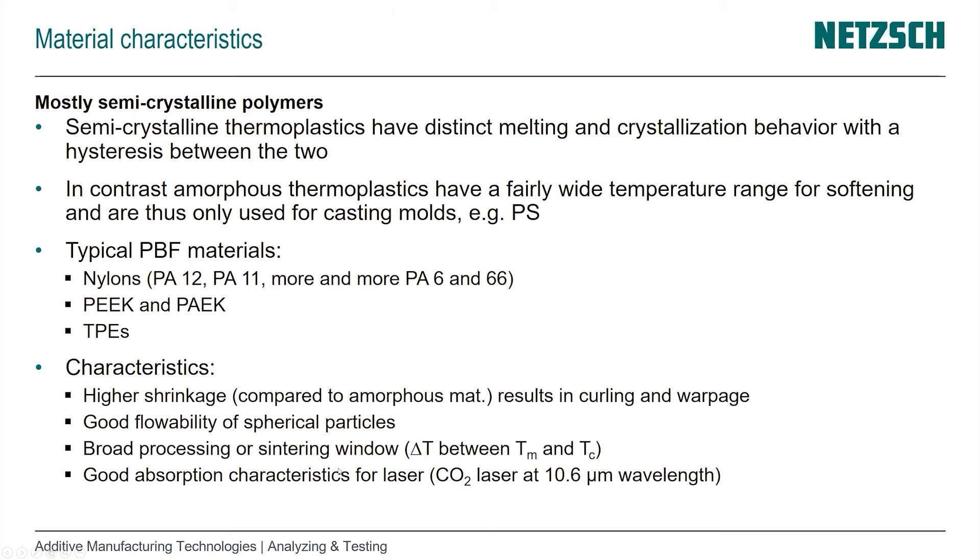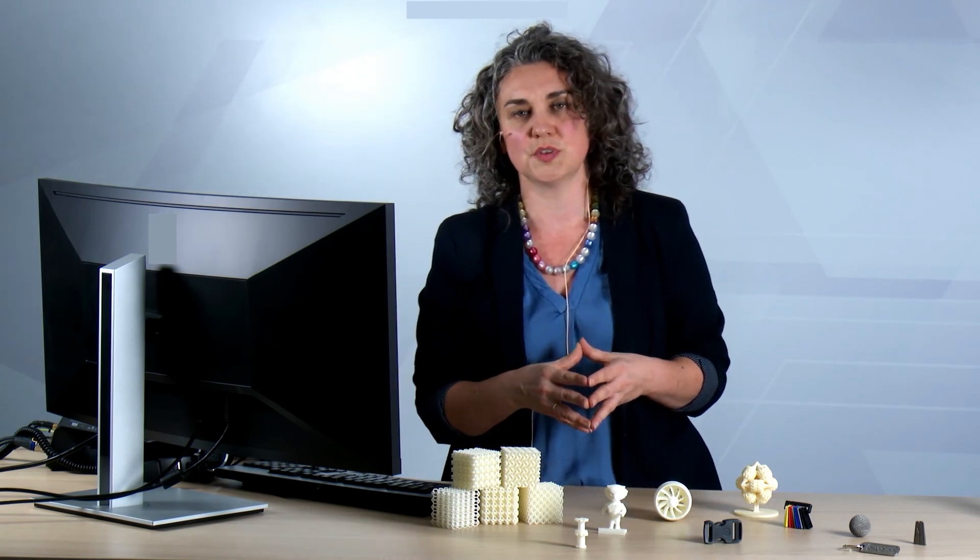A relatively large delta T between the melt temperature and crystallization temperature. We want good absorption characteristics for the laser. Typically, CO2 lasers with a wavelength of 10.6 micrometers are used because polymers of all kinds absorb very well at that wavelength, allowing us to use one machine for different materials.